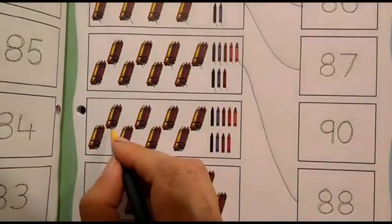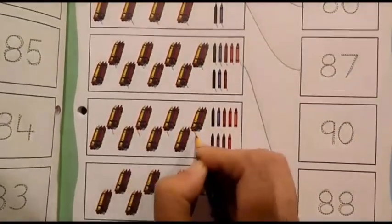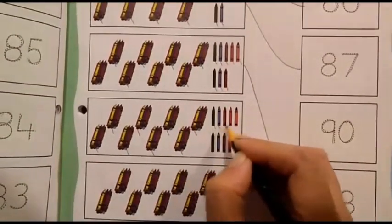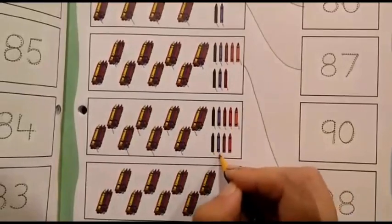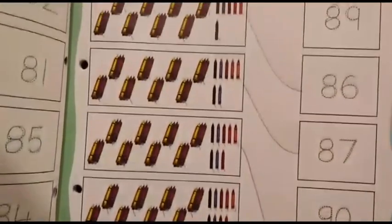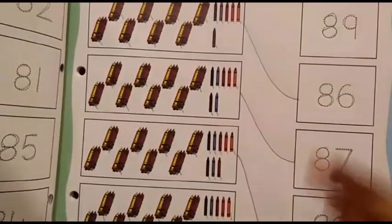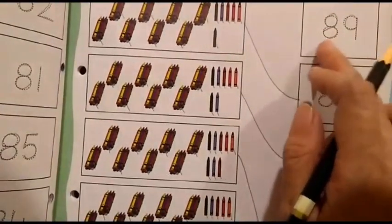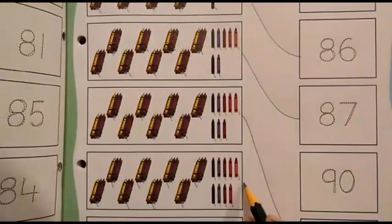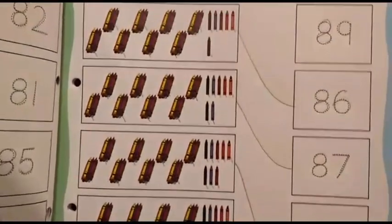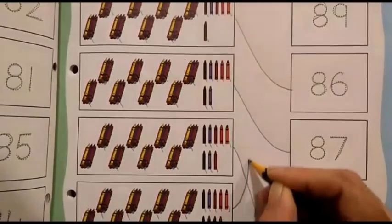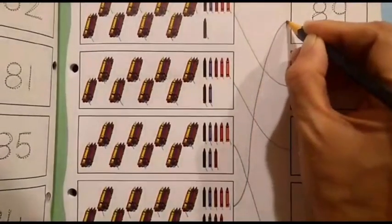Then again, we will start. 10, 20, 30, 40, 50, 60, 70, 80, 81, 82, 83, 84, 85, 86, 87, 88, 89. Which numbers are there in number 89? 8 and 9. 8, 9, 89. So, 89 will be matched with 89 crayons. Right? So, let us begin matching from here to there.